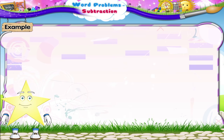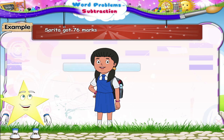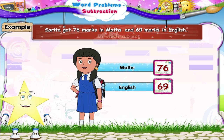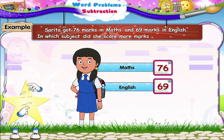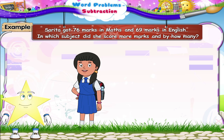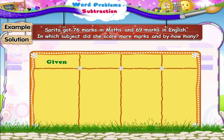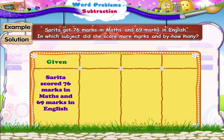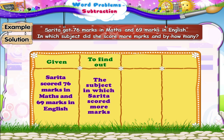Let us solve the next word problem, Stari. Sarita got 76 marks in maths and 69 marks in English. In which subject did she score more marks and how many? It is given that Sarita scored 76 marks in maths and 69 marks in English. We have to find the subject in which Sarita scored more marks. That's easy — Sarita has scored more marks in maths.